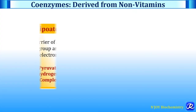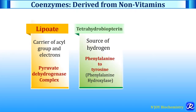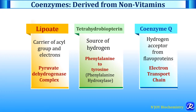Some more coenzymes are derived from non-vitamins. Lipoate is the carrier of acyl groups and electrons, required by the pyruvate dehydrogenase complex which converts pyruvate to acetyl-CoA. Tetrahydrobiopterin is the source of hydrogen important in the conversion of phenylalanine to tyrosine, catalyzed by phenylalanine hydroxylase. Coenzyme Q is the hydrogen acceptor from flavoproteins and is a component of the electron transport chain.